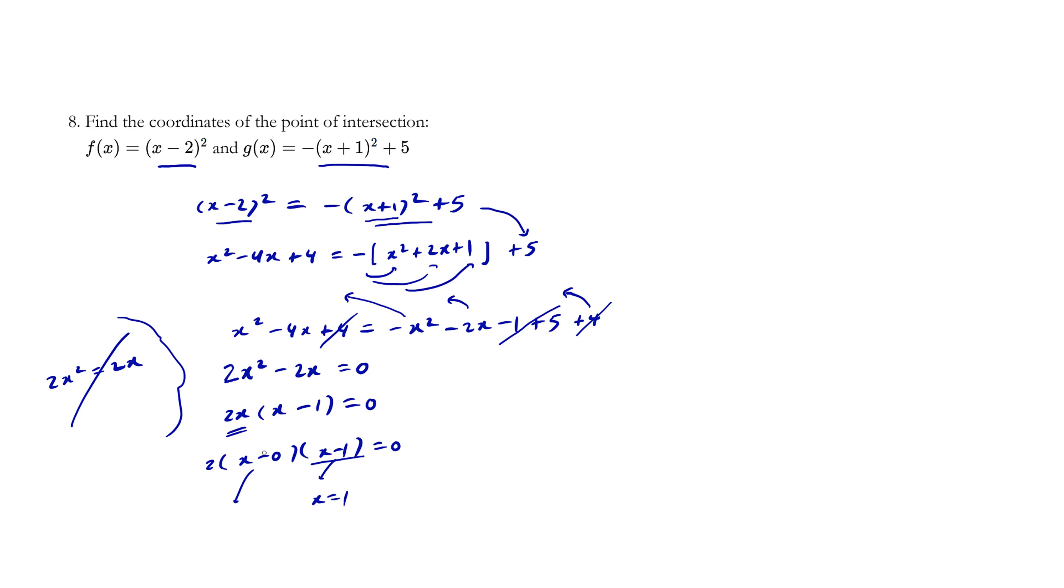In the same way, what's the opposite of negative 0? It's positive 0, or we just say 0. So from now on, when you see 2x times x minus 1, we know that the roots or the x-intercepts are 0 and 1.